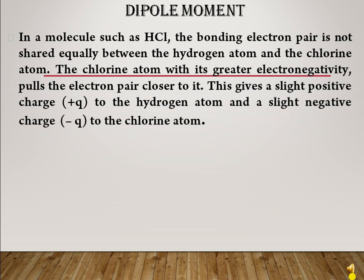If you compare hydrogen and chlorine, chlorine is more electronegative. That is why the electron pairs are attracted towards chlorine, making chlorine negative in nature. And ultimately, because of the deficiency of electrons, hydrogen becomes positive, resulting in the formation of two poles. Chlorine represents the negative pole while hydrogen represents the positive pole.